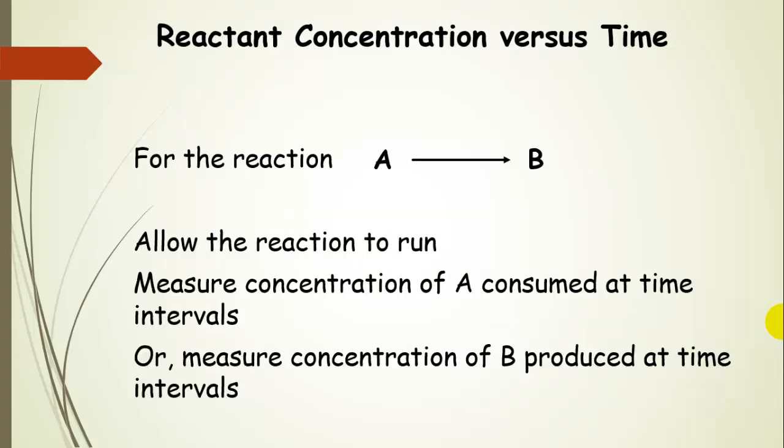Okay, so let's just look at a general reaction. This is the reaction A is converted to B. We're going to allow this reaction to run. And as it's going, we're going to measure the concentration of A consumed at various time intervals. Alternatively, we could also measure the concentration of B produced at time intervals. Either way, we could perform a kinetics experiment and track the concentration of either A or B, depending on what is most useful.